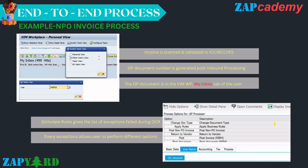Taking the example of non-PO invoice processing: we first go to the WIM workplace, where we can switch between multiple work views — personal work view, another user's work view, the entire team's view, or the all-users view. Once in the desired work view, we navigate to the work item we need to act upon. All DP documents are available in the My Inbox tab. Once inside the DP document ID, clicking on 'Simulate Rules' gives us the full list of exceptions that failed during OCR. Based on these exceptions, the user can either refer the item to another agent or act upon it themselves.